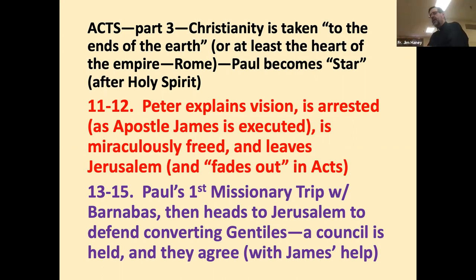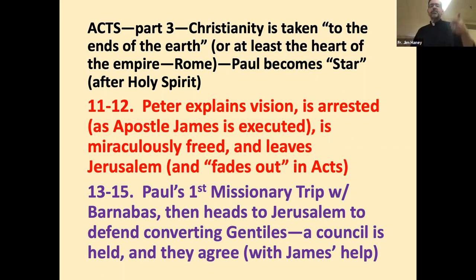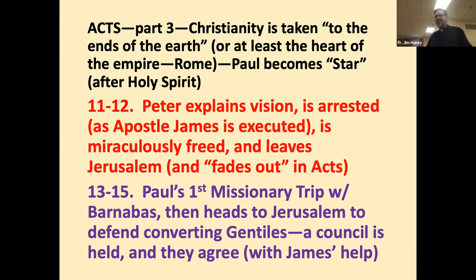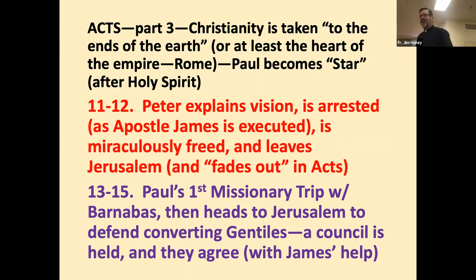Christianity gets pushed out of the Jerusalem nest. In chapters 11 and 12, Peter explains his vision to the Jerusalem church. James the brother of John — son of Zebedee, not James the brother of Jesus — is arrested and executed, the first of the Twelve to be martyred. Peter is also arrested but miraculously freed from jail, showing up at the church house where a servant girl thinks he's a ghost. Peter then heads out to spread the gospel elsewhere and fades as the lead character in Acts.